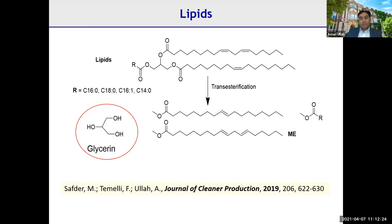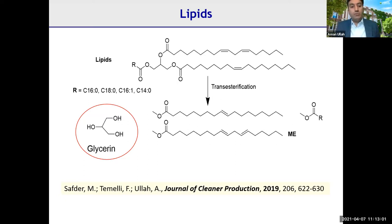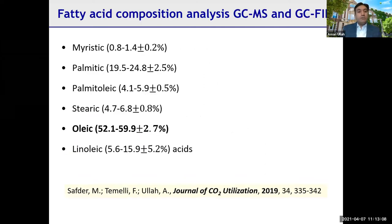We performed transesterification — separating fatty esters from glycerine. Glycerine is also produced as a core byproduct by the biofuel and oleochemical industry; because it contains catalysts or acids/bases, it cannot be used for food or pharmaceutical applications. We analyzed the fatty acid composition of the lipids and found oleic acid at the highest percentage, 50–60%, along with other unsaturated fatty acids.